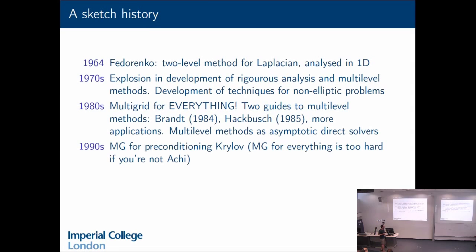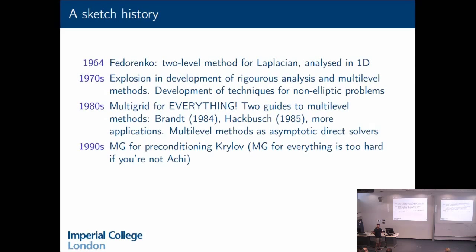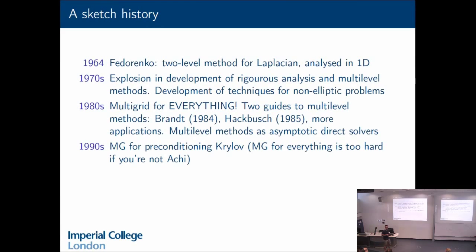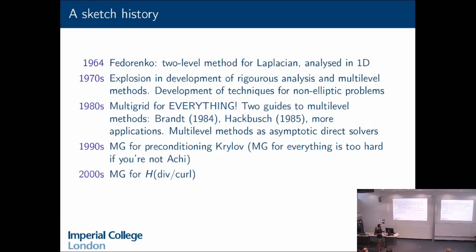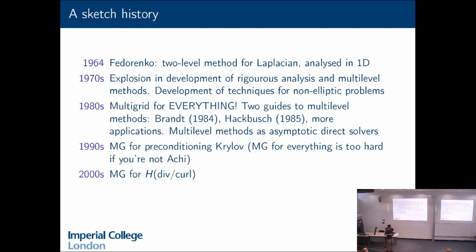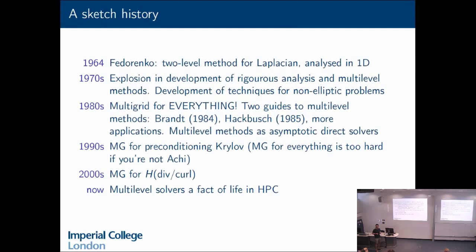In the 1990s, multigrid for everything turned out to be too hard if you're not Aki. So lots of people started using multigrid for preconditioning Krylov — you just use multigrid to improve the spectrum of your operator and use your Krylov accelerator to fix up any issues from not implementing it quite right. In the 2000s, lots of people started looking at H-div and curl-curl problems and realized the standard techniques for elliptic problems in H1 weren't working, so there's a bunch of development on auxiliary space preconditioning for multigrid and direct preconditioning for multigrid in H-div and H-curl. And these days, if you're really serious about solving big problems on HPC, multilevel solvers are a fact of life.